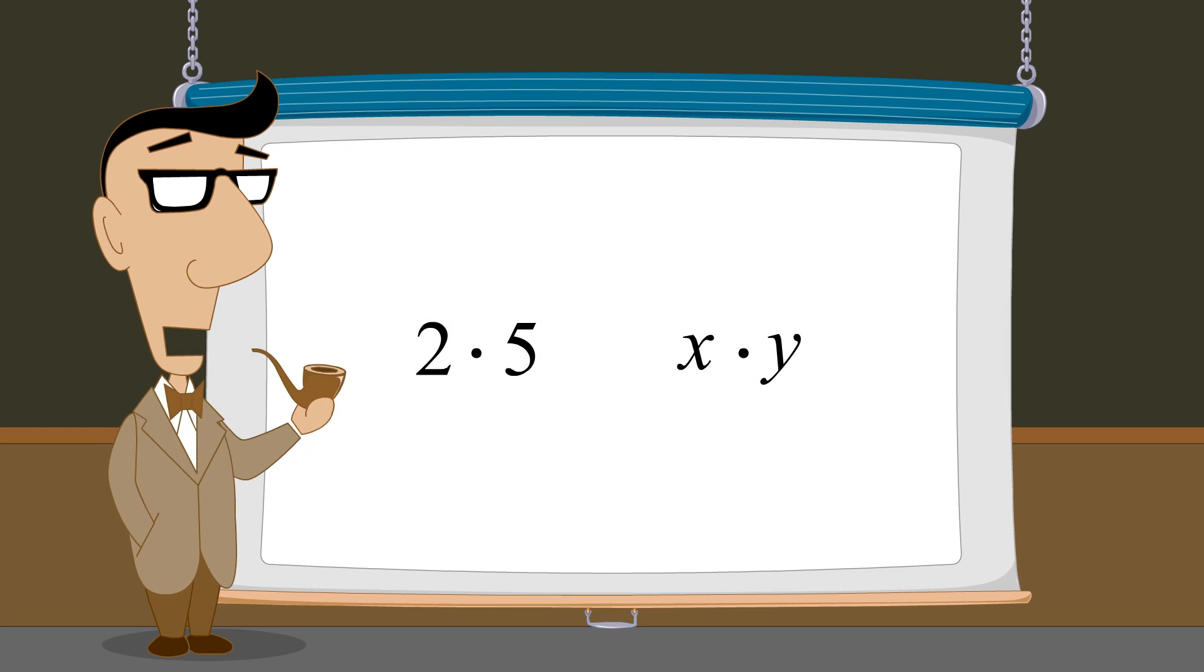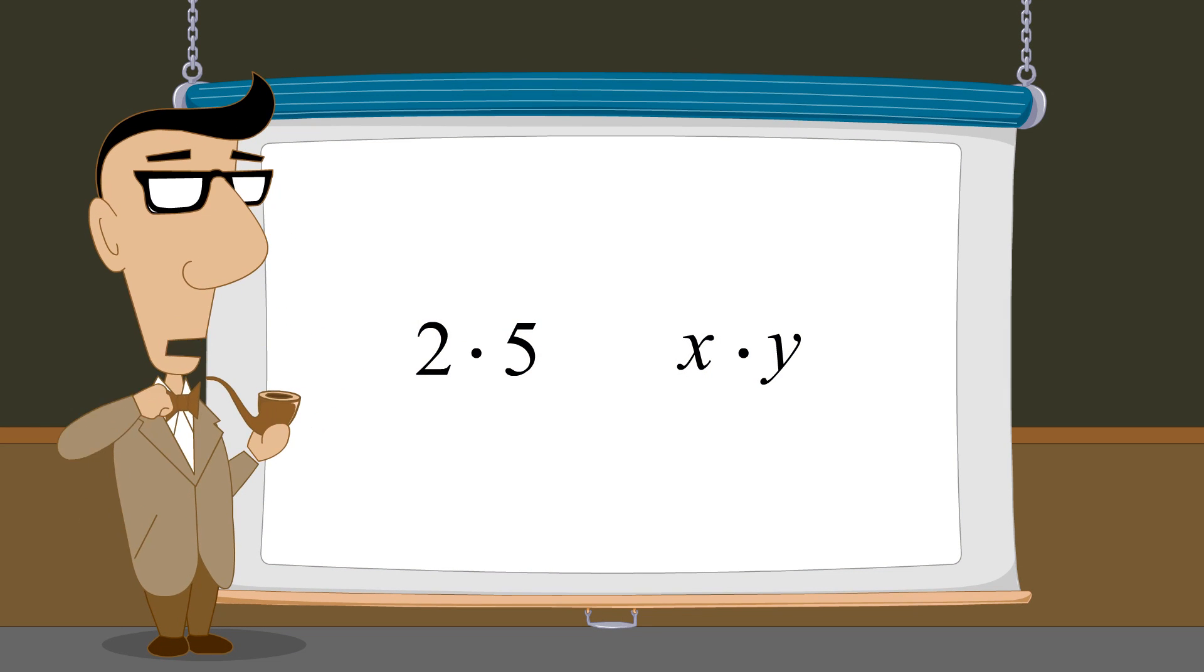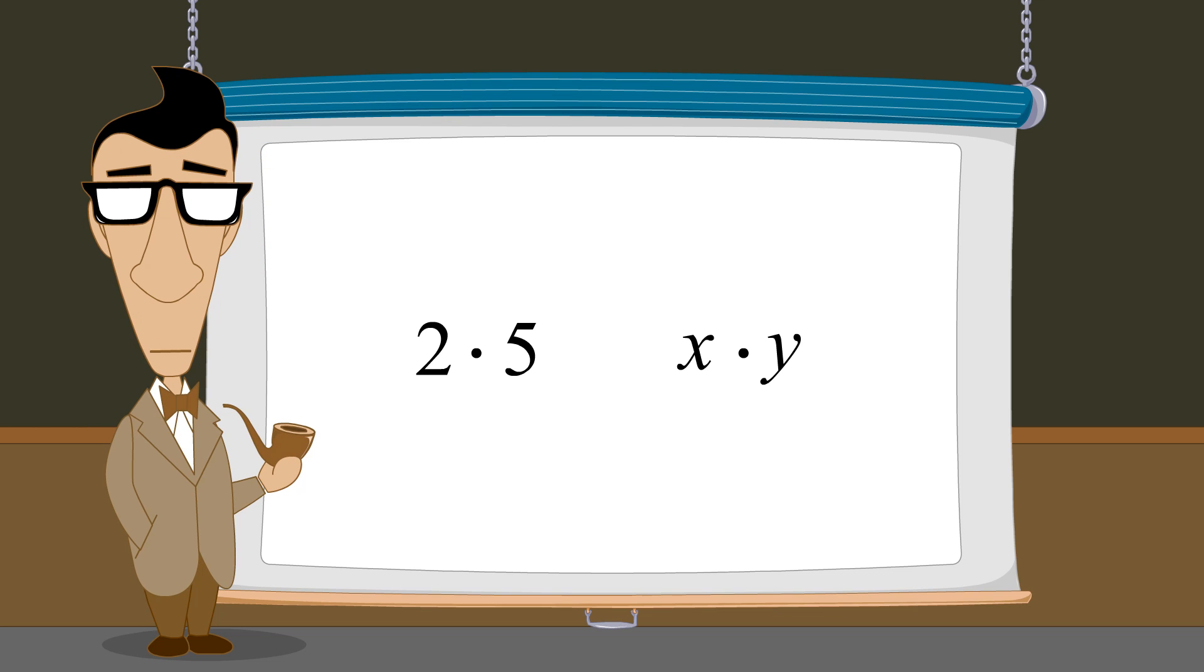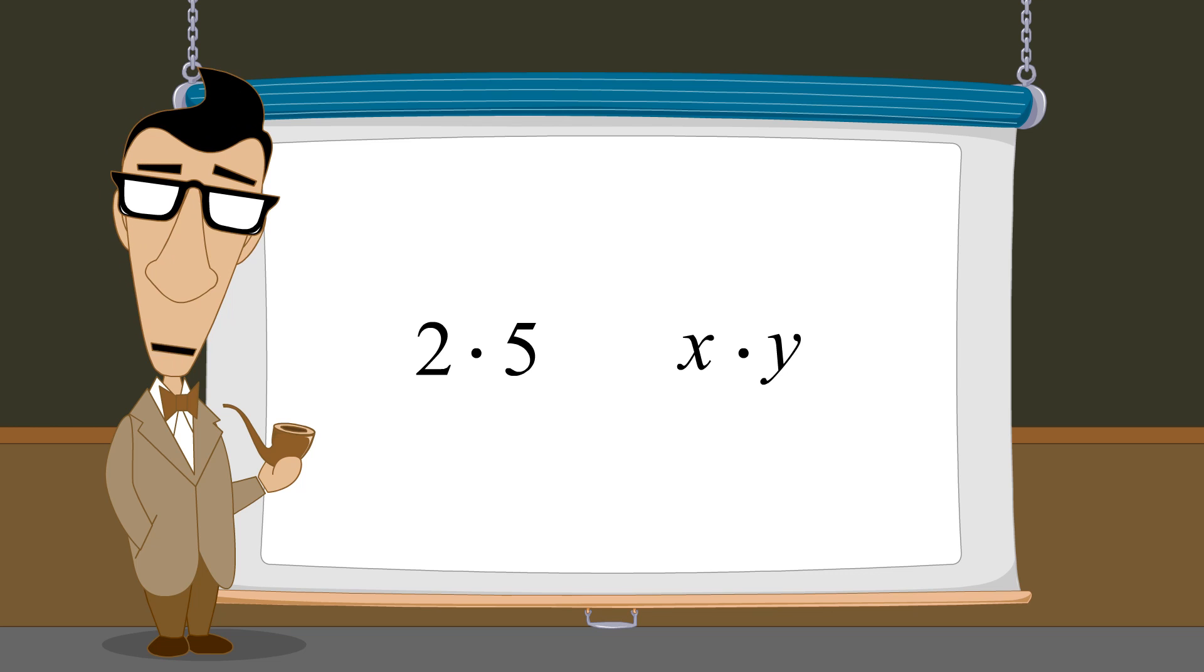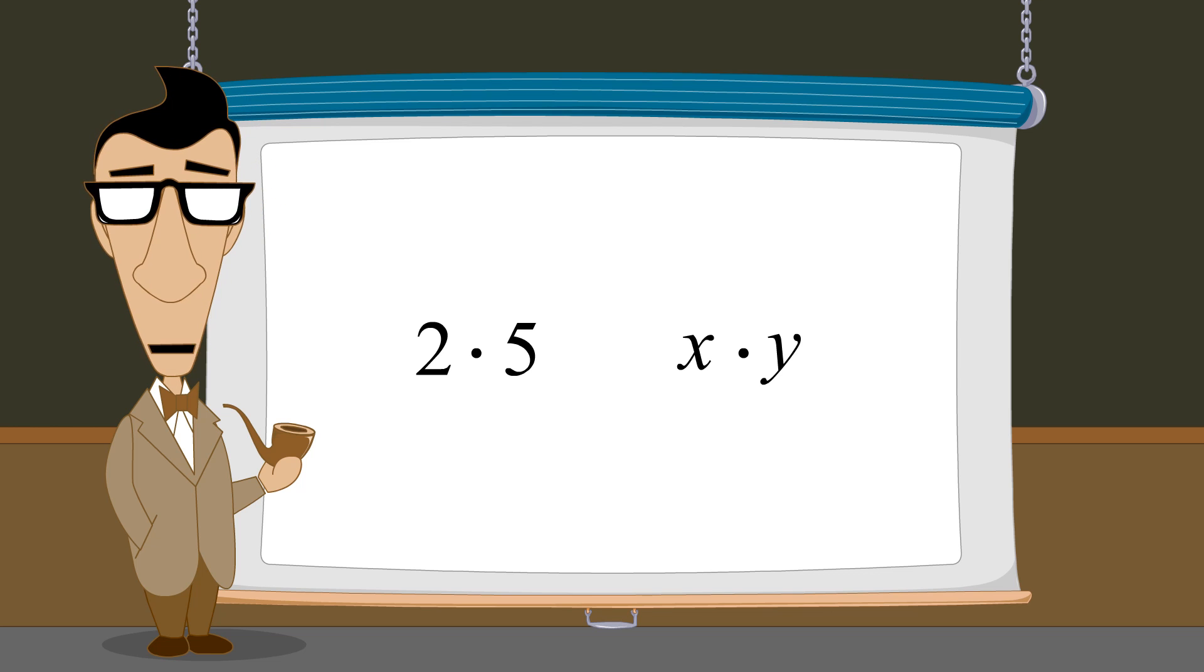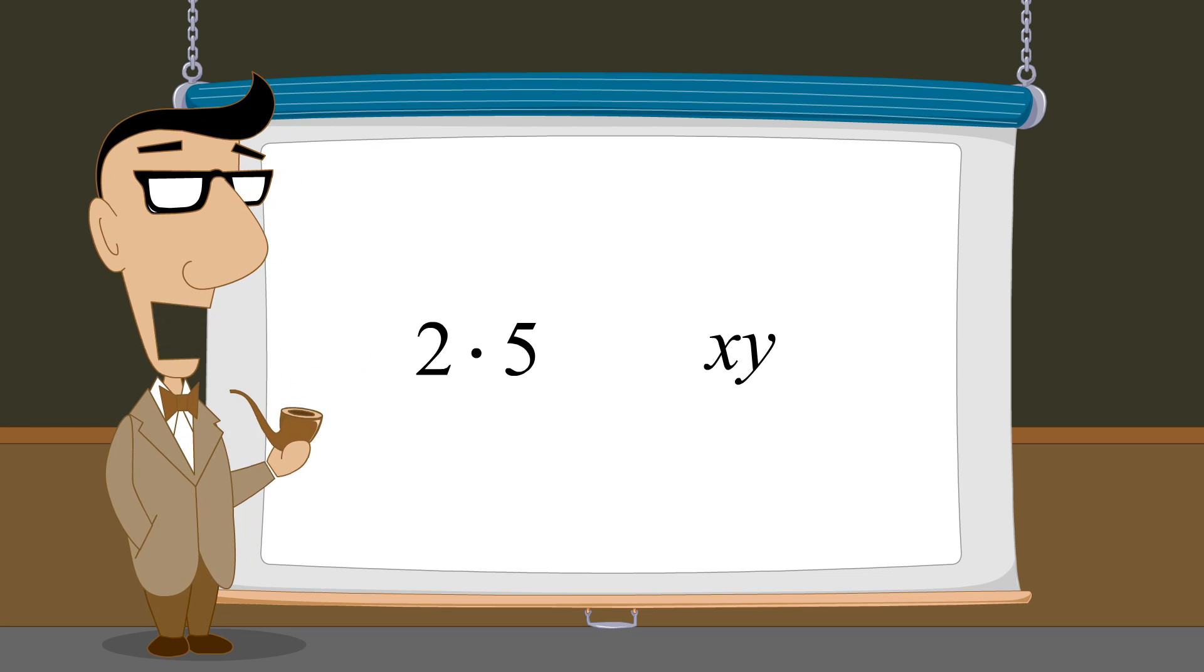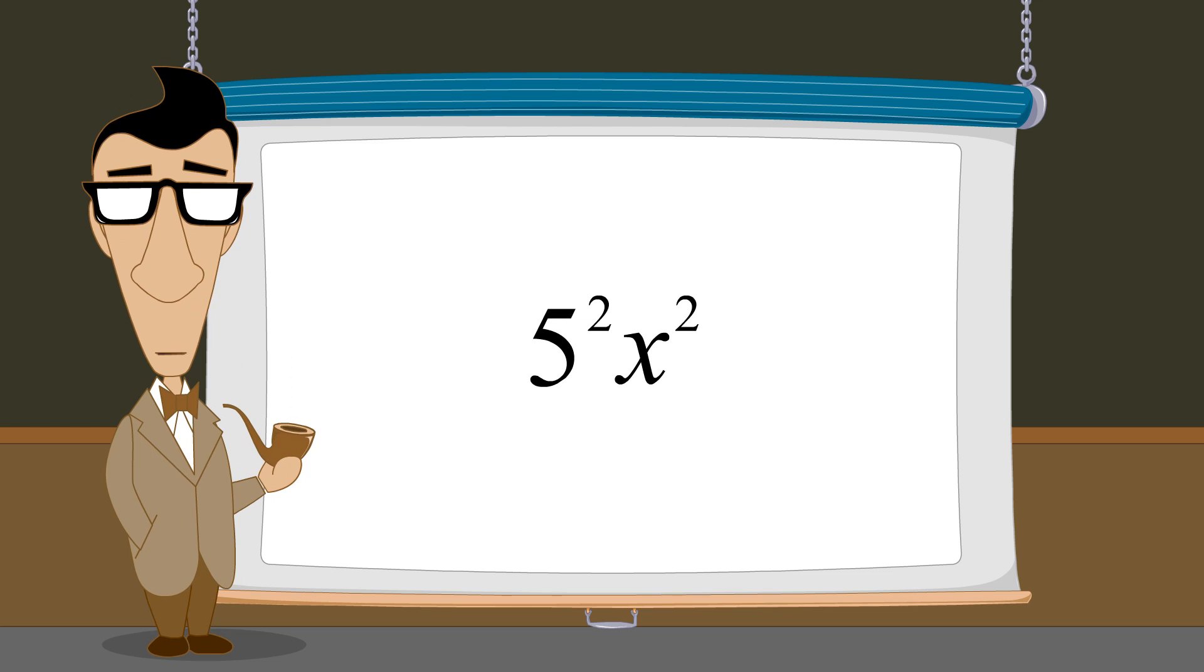When using variables, we have one additional option for indicating that two variables are multiplied. We can write the variables next to each other with nothing in between. We can also use this notation when multiplying a variable and a number, and we can also do this when these terms have exponents.